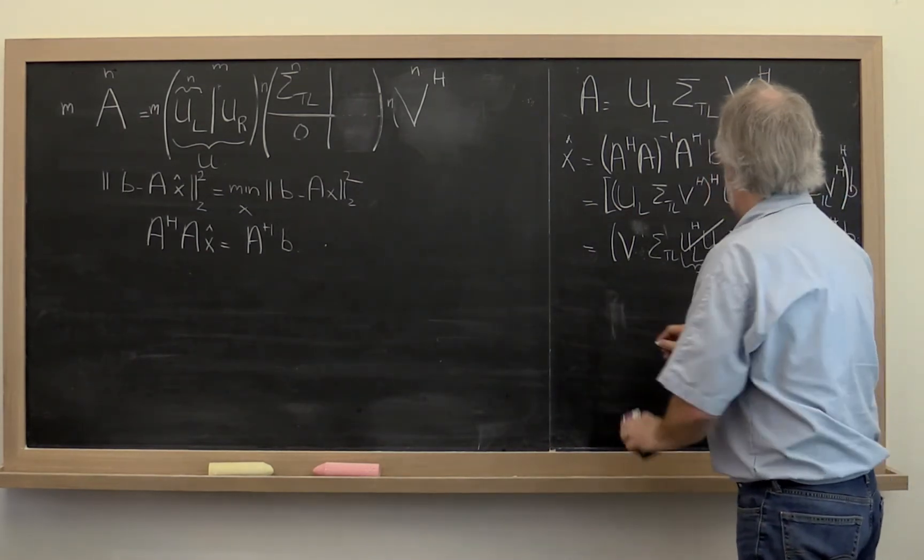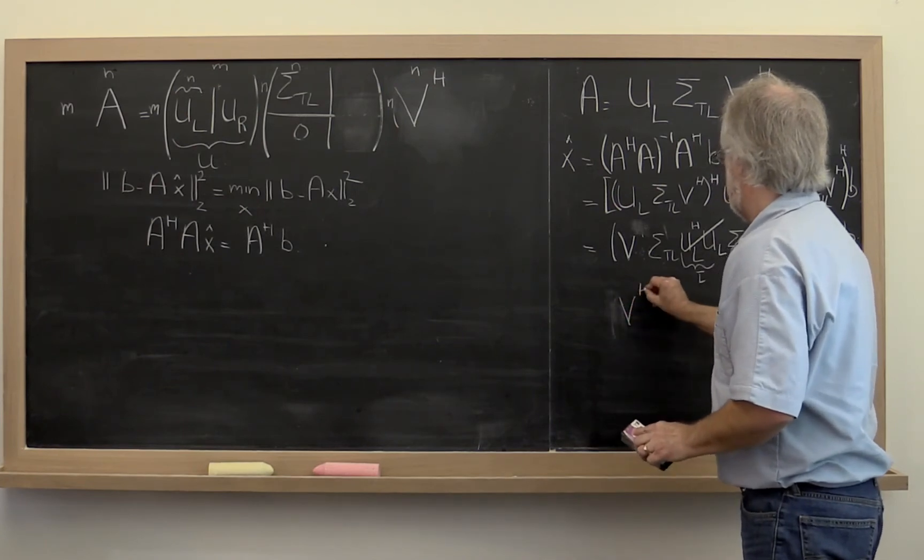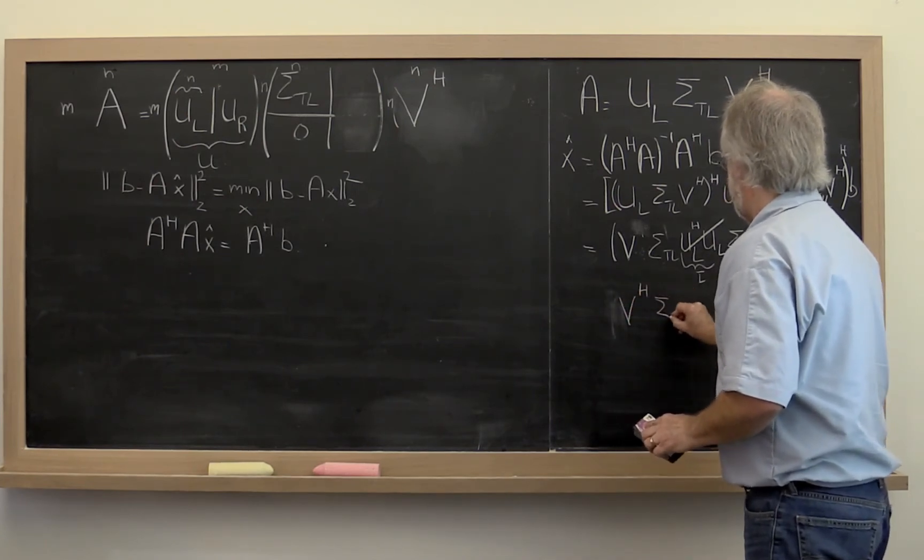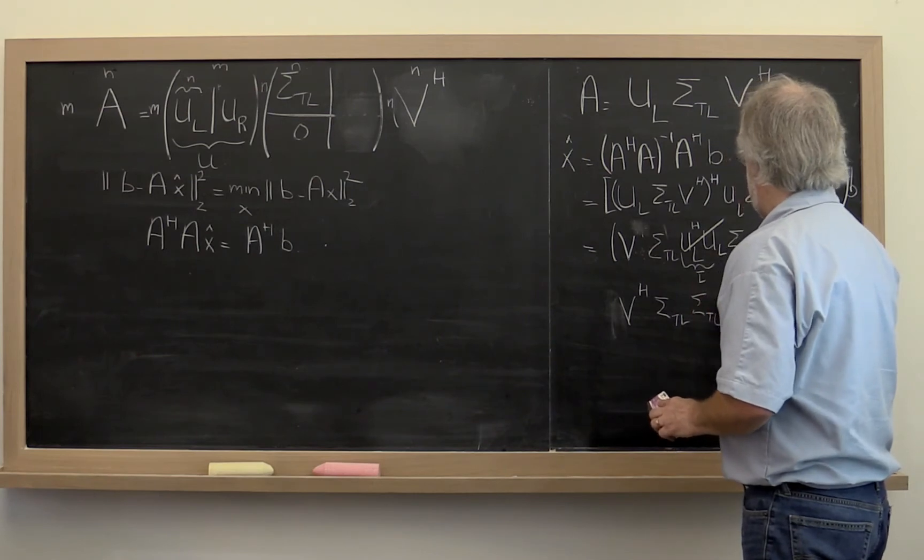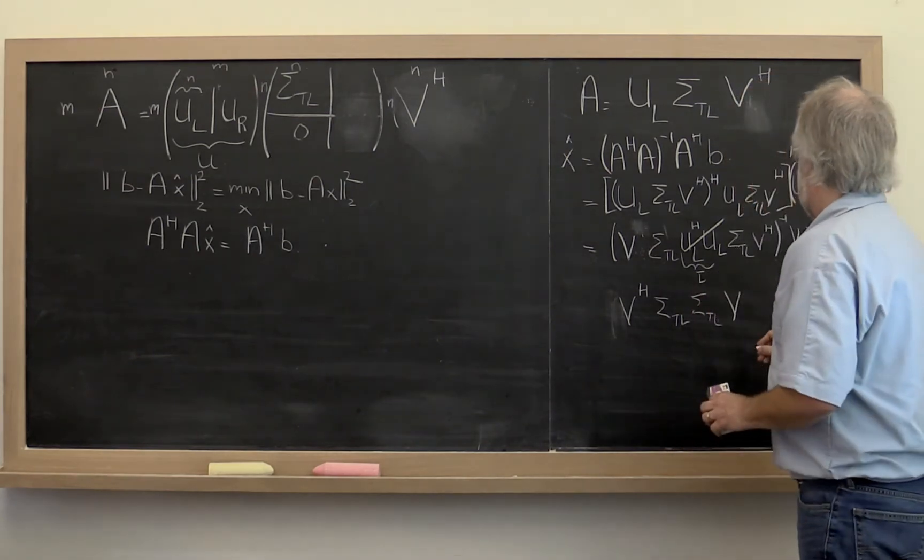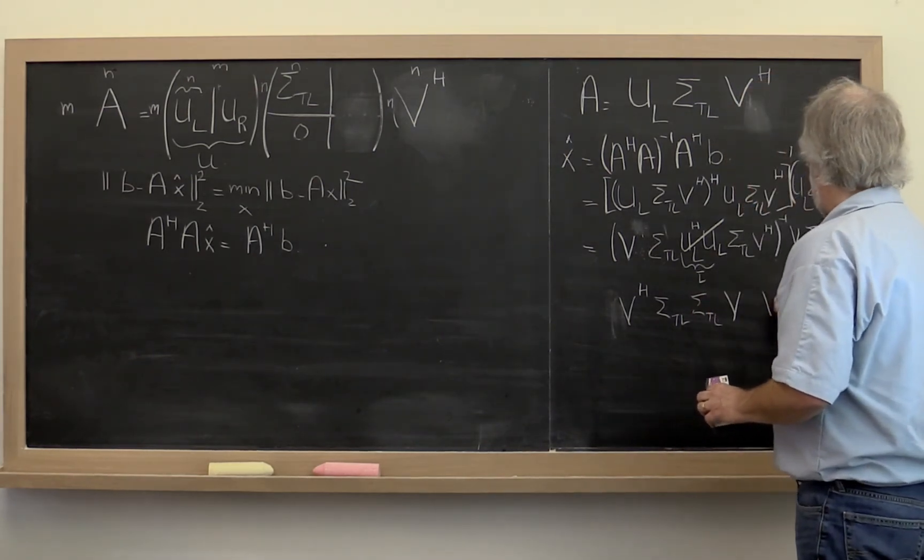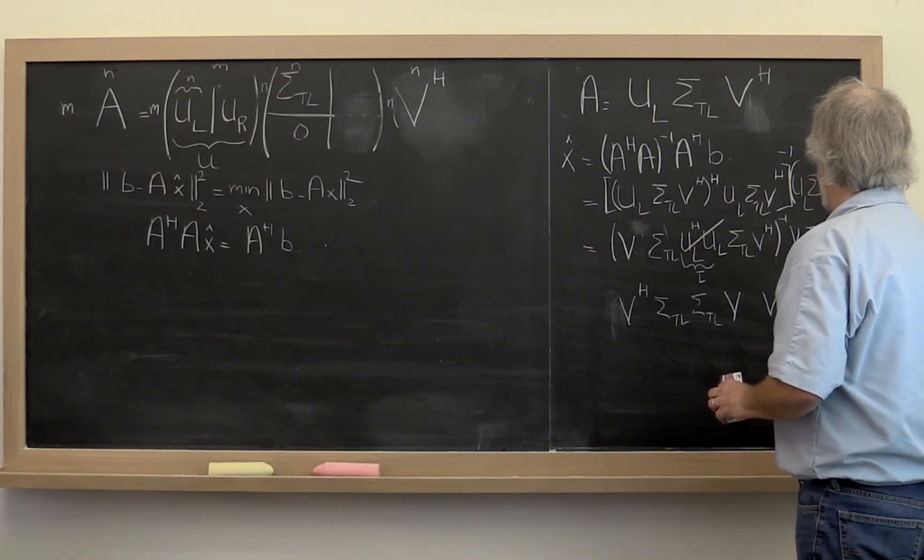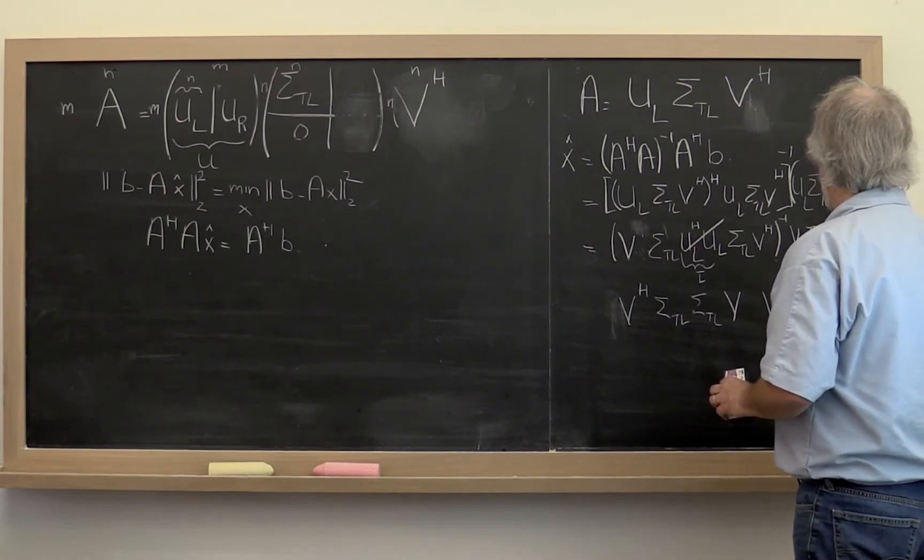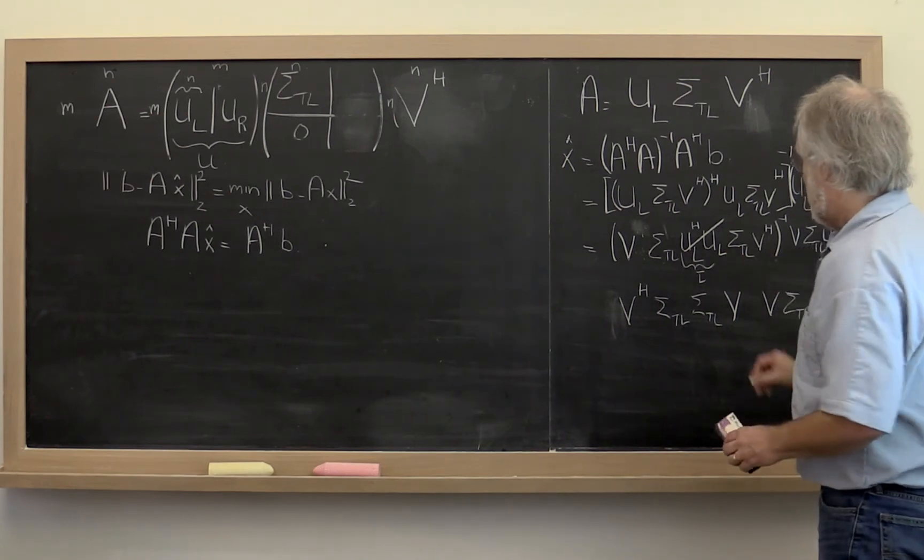We get V V Hermitian sigma top left times sigma top left times V. And then we need to multiply that times V sigma top left UL Hermitian B. And what do we see now?